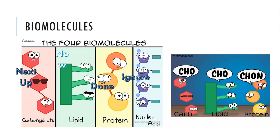Just a review of the biomolecules that are around. There are four main types of biomolecules: carbohydrates, lipids, proteins, and nucleic acids. We don't look at nucleic acids. We have already done proteins. We're doing lipids at the moment and next up we will be looking at carbohydrates.